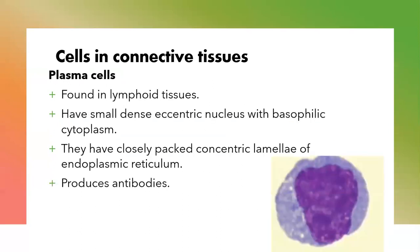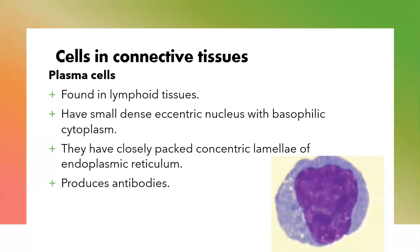The plasma cells are found in lymphoid tissues. Plasma cells are formed when the B lymphocytes are activated and change into plasma cells, which in turn produce antibodies. They have a small eccentric nucleus with basophilic cytoplasm — the cytoplasm stains with a basic stain, so they appear bluish. They have closely packed concentric laminae of endoplasmic reticulum. When activated, they produce antibodies to fight infections.